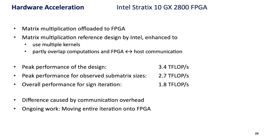In theory our design would achieve 3.4 teraflops but for the observed submatrix sizes this drops to 2.7 teraflops. In the end we were able to get 1.8 teraflops for the entire sign iteration. The difference is mainly caused by communication overhead so we're currently working on moving the entire iteration scheme onto the FPGA.